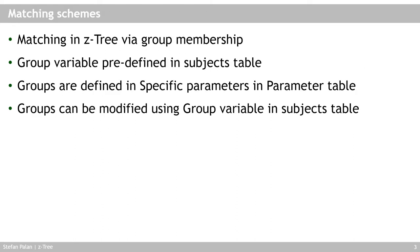Matching in Ctree is accomplished via group membership. There is a variable called Group — with a capital G — in the subjects table that is already predefined by Ctree. At the beginning, every subject's group is set to one, meaning everybody is in the same group. You can change the group variable in two ways: either through the specific parameters in the parameter table, or by using a program to modify the group variable directly in the subjects table.